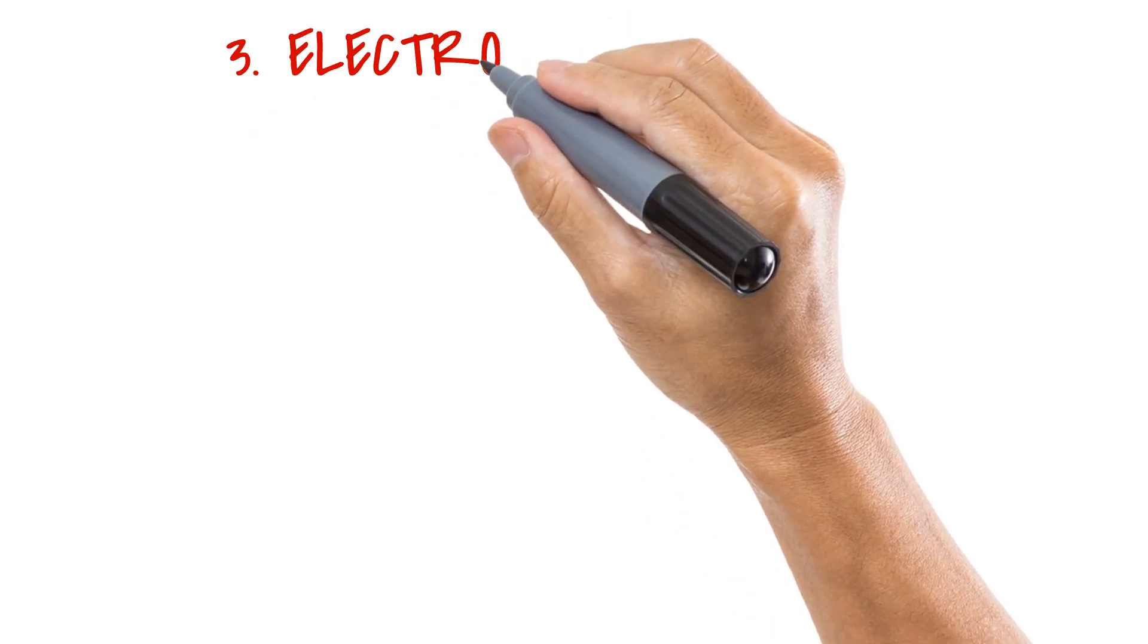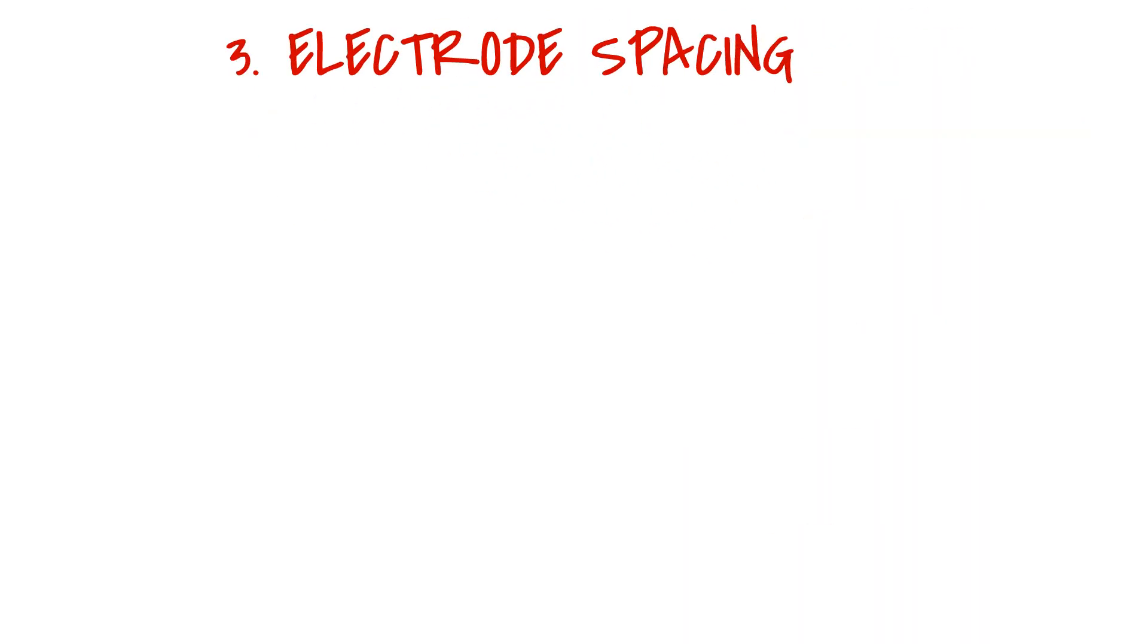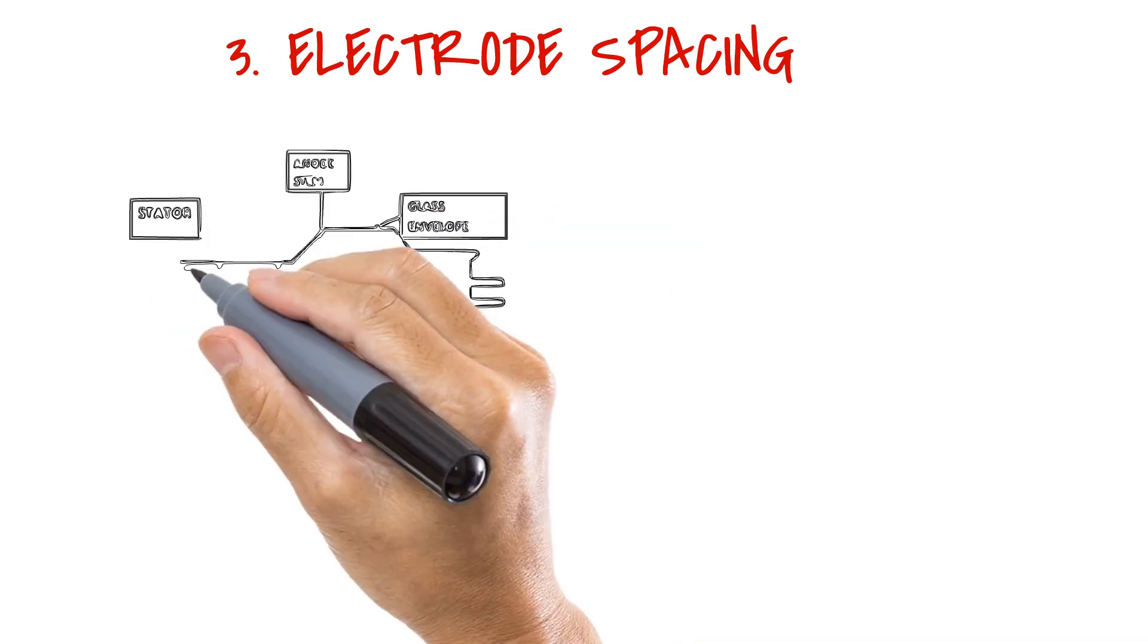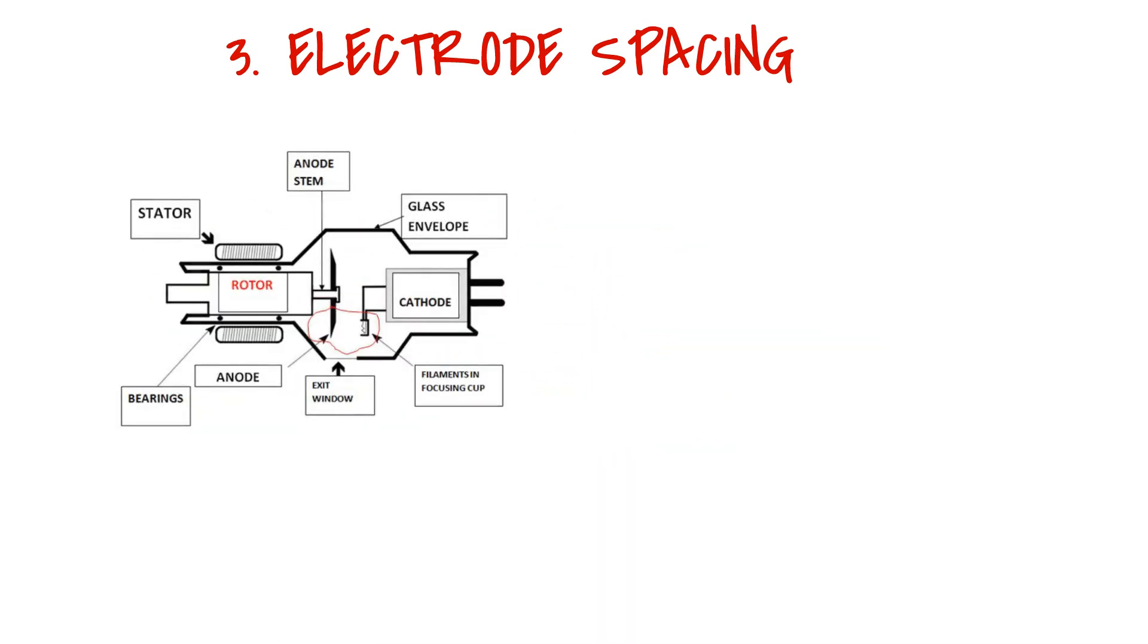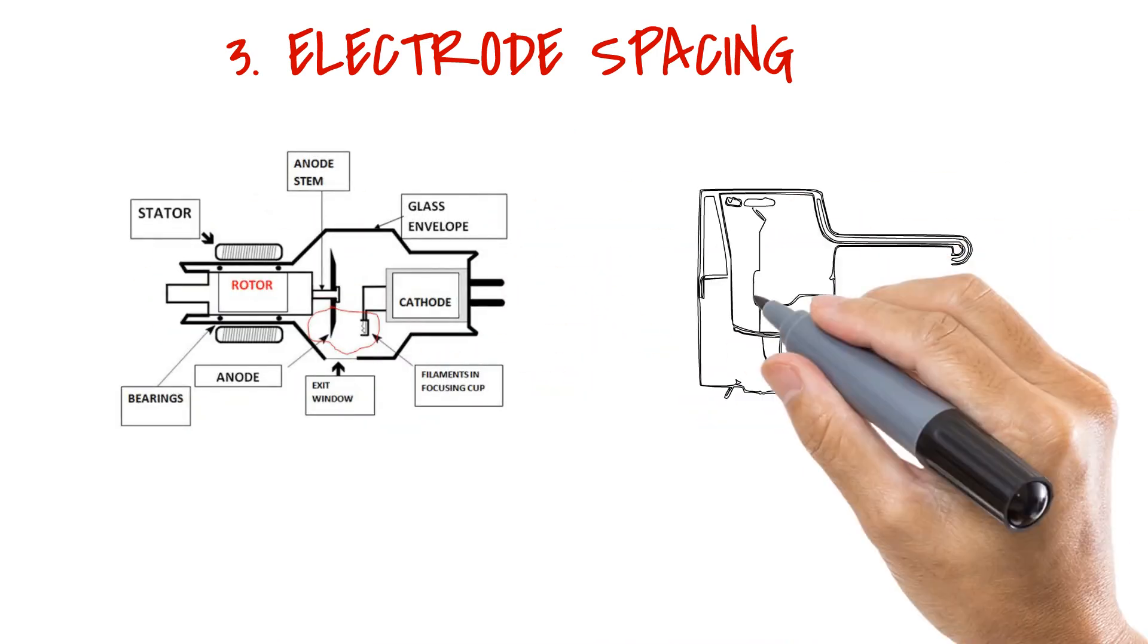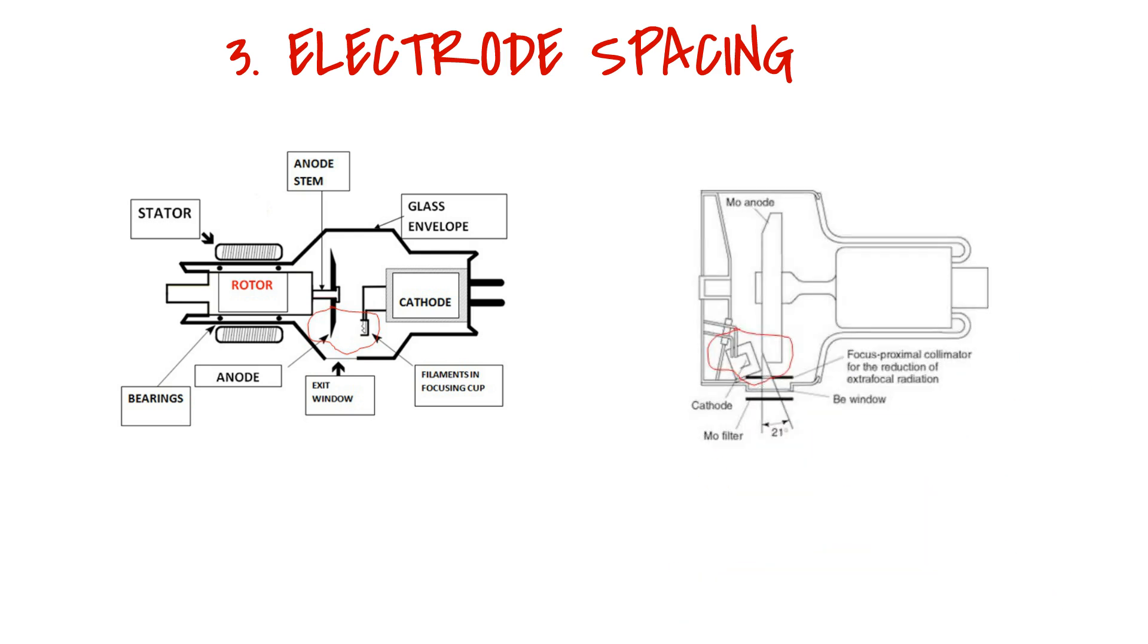Another modification made to the mammography tube is the distance between the cathode and anode of the tube. Because of the low kilovoltage used in mammography, the force that attracts electrons from cathode to anode is smaller. Thus, the cathode and anode in a mammography tube are made to be closer to allow this weak attractive force to be sufficient for transporting electrons from cathode to anode. This also provides the advantage of having smaller X-ray tubes in mammography.